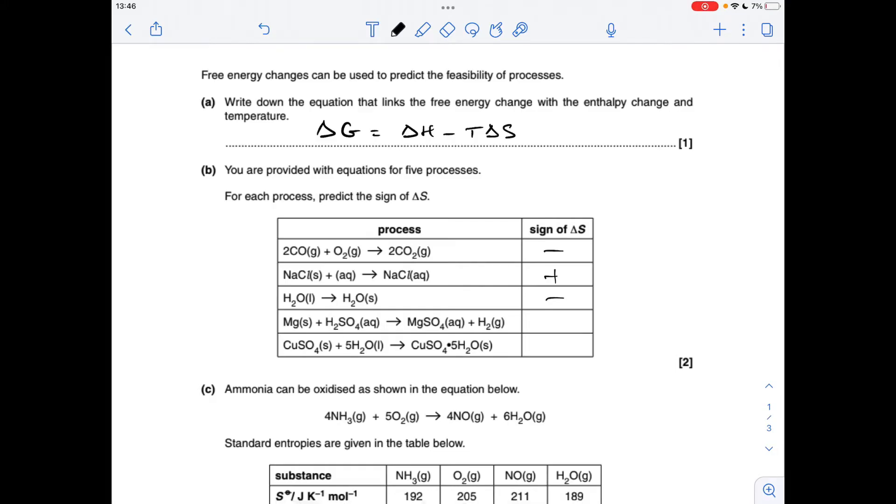Next one, we're going from solid plus aqueous to aqueous plus gas, so that's a positive entropy change because of the formation of gas. And the final one, we're going from solid and liquid to a solid, so that's a decrease in entropy, a negative entropy sign, because it's getting more ordered or less disordered.